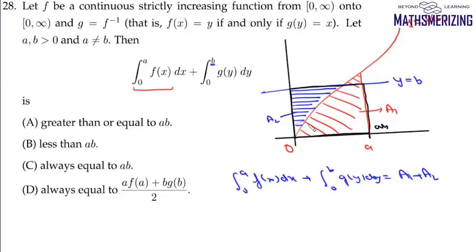This area a₁ + a₂ is actually greater than or equal to the area of rectangle ab. So the value of this integral is always greater than or equal to ab, and that's option A.